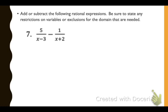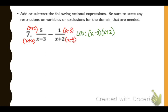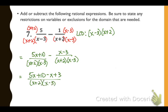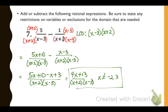Number 7: we're subtracting with no factoring needed. We find a common denominator by taking a term from each denominator, multiplying the first rational top and bottom by x plus 2, and the second by x minus 3. Distributing gives us 5x plus 10 over the common denominator, minus x minus 3. When subtracting, distribute the negative: 5x plus 10 minus x plus 3. Combining like terms gives our final expression. We exclude negative 2 and 3.